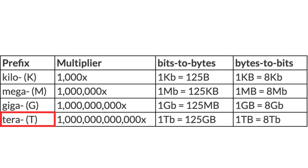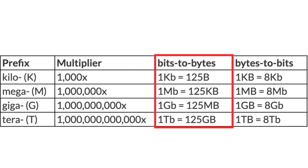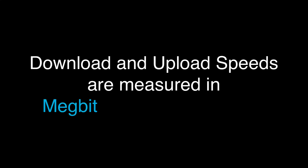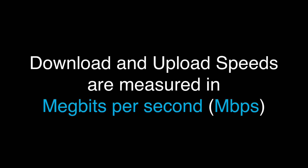One terabit is equal to one trillion bits. As you can see in the third column, converting to bytes means dividing by eight for each. When we measure download and upload speeds, we do this in megabits per second.